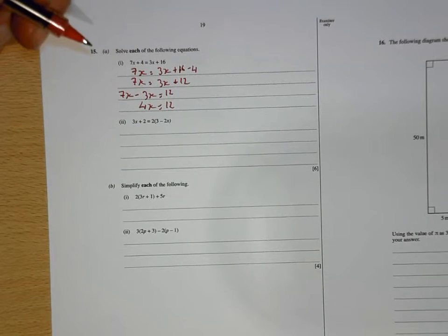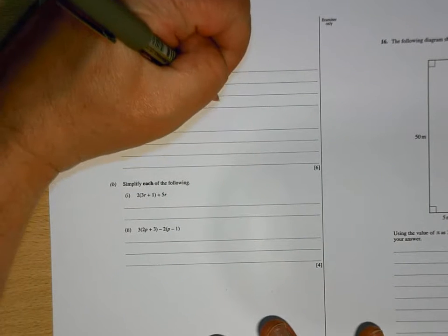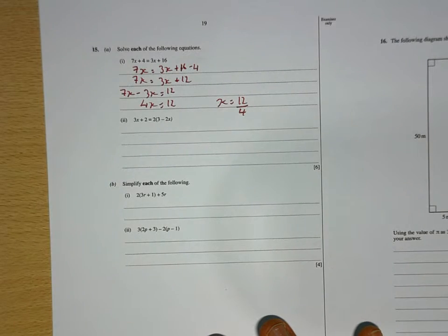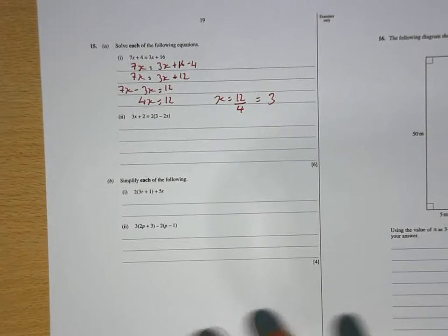7X take away 3X is 4X. 4X equals 12. To get the X on its own, you've got to do the opposite. X times it by 4, which is dividing by 4. So, X is 12. And I'll just be right to divide like that. 12 divided by 4 is 3.